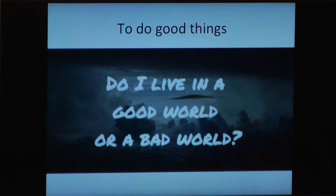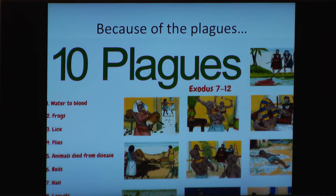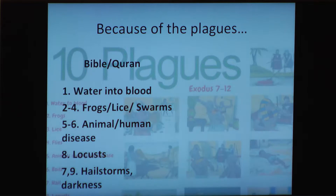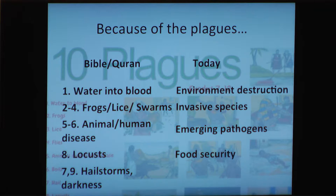Secondly, we want to do good things, not bad things. To go a bit biblical — the Ten Plagues from Exodus include water to blood, frogs, lice, and so on. Today we have environmental destruction, invasive species, emerging pathogens, food security problems, and climate change. All of these have potential biological solutions that we think GP-Write could be an integral part of.